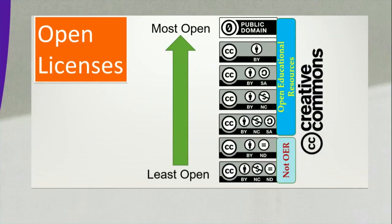Among these 6 or 7 licenses including the public domain license, CC BY-NC-ND and CC BY-ND are considered least open and are not considered OERs. The other four licenses — BY-NC-SA, BY-NC, BY-SA and BY — including public domain, are considered OERs. Among all 7 licenses, public domain is the most open, followed by CC BY, CC BY-SA, CC BY-NC, and CC BY-NC-SA, while CC BY-NC-ND and CC BY-ND are least open.